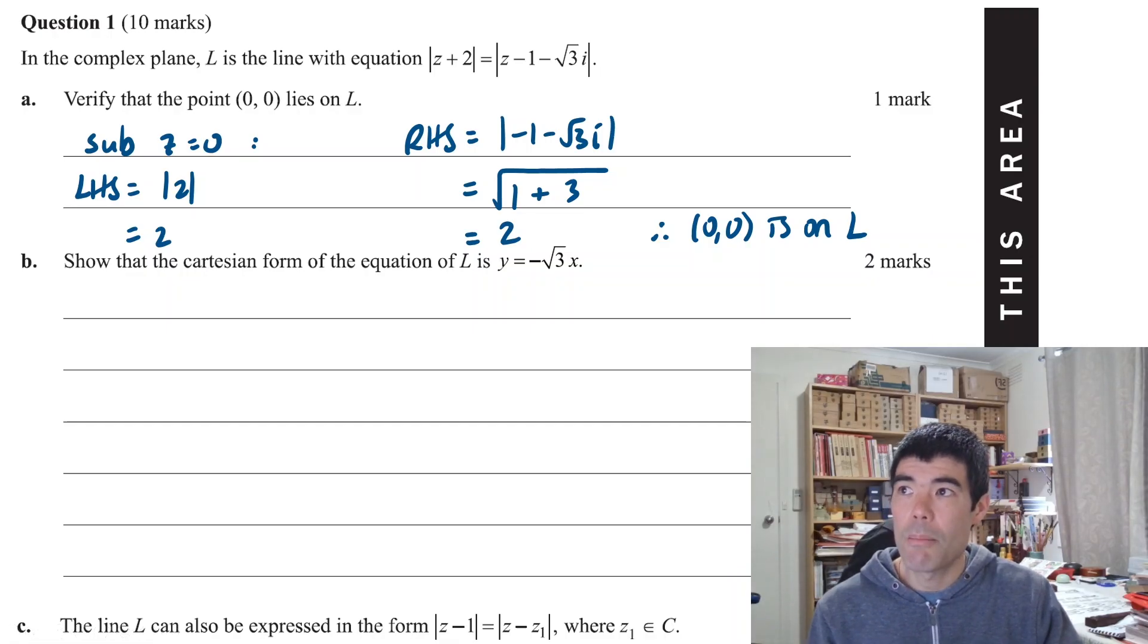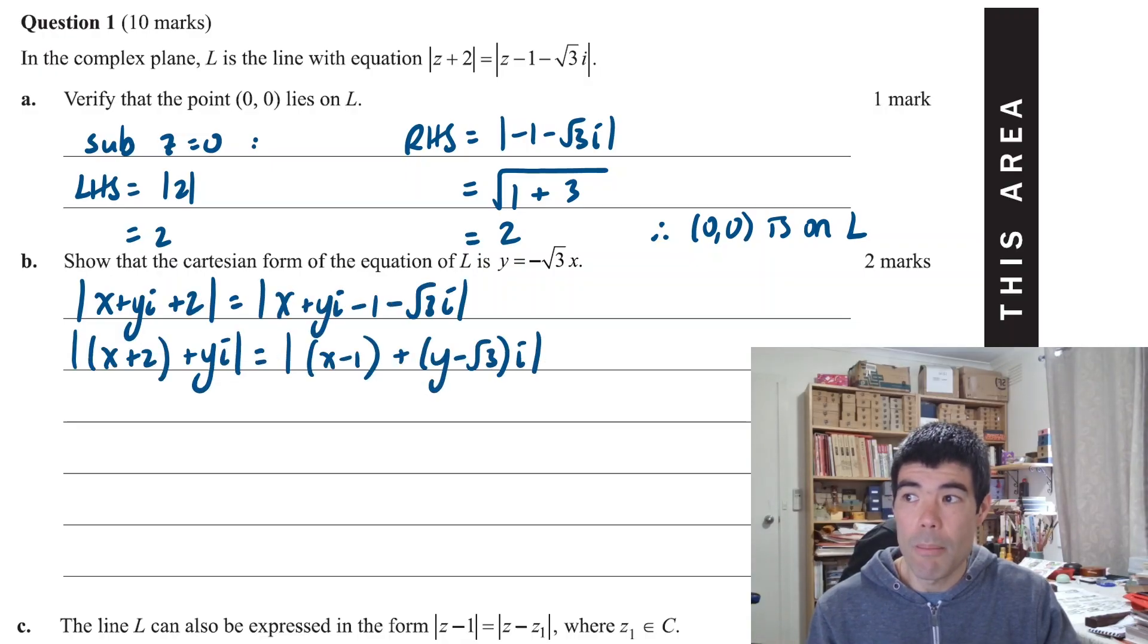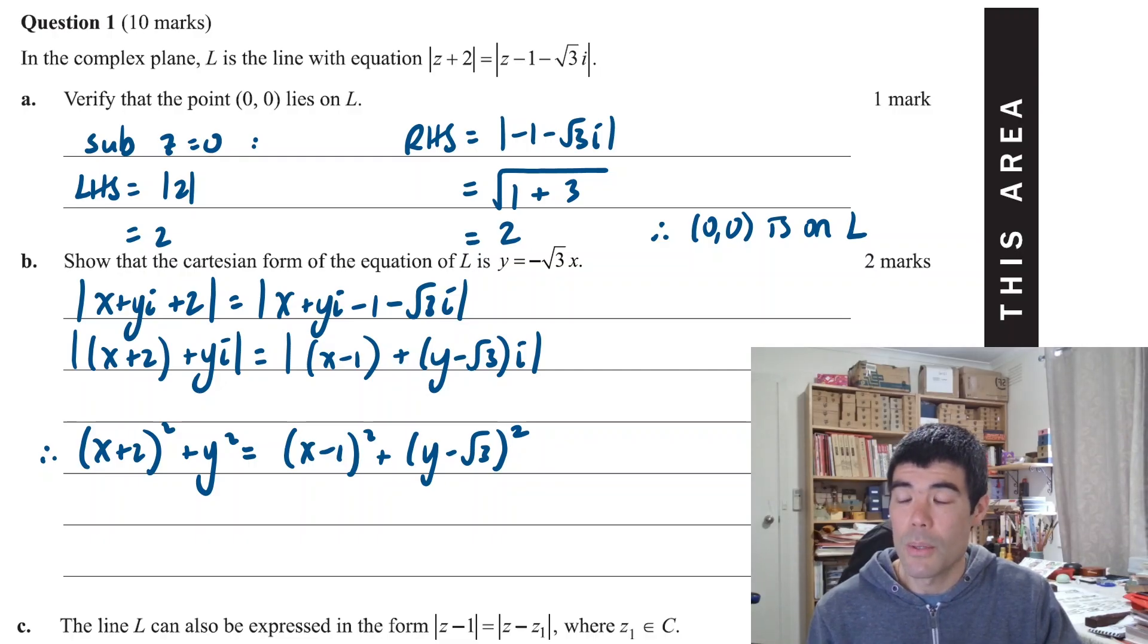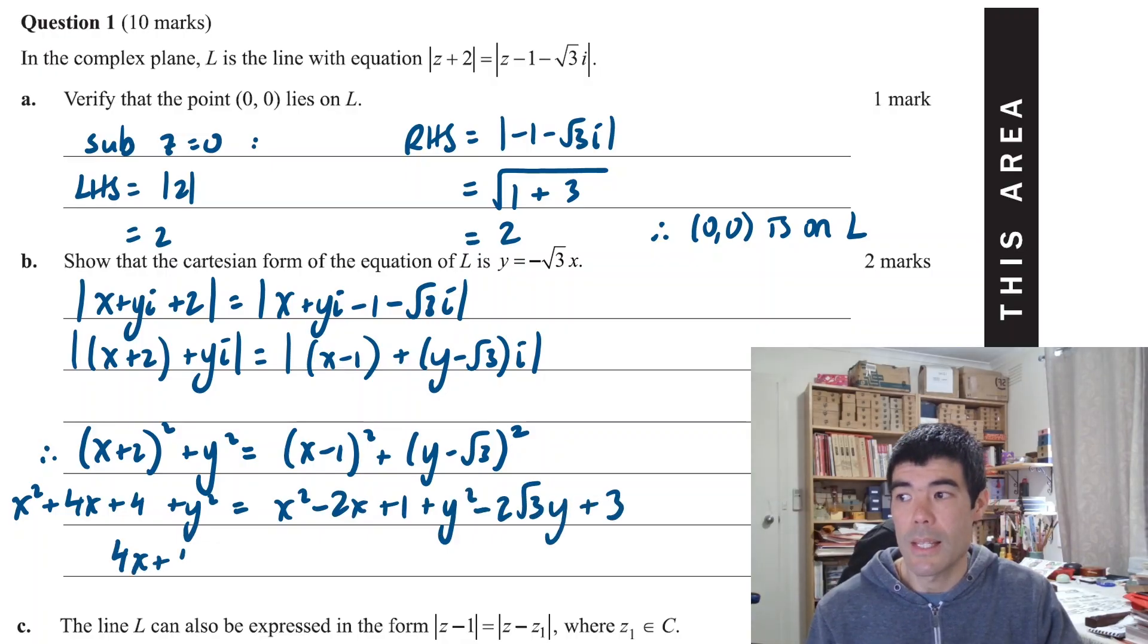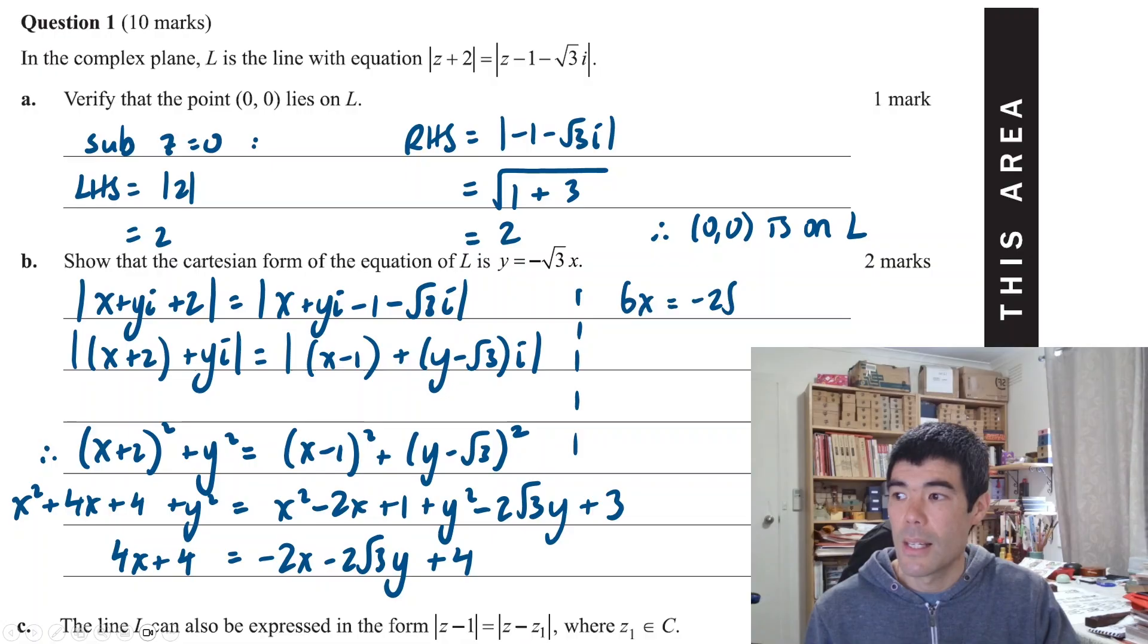Part B is to show that. So we want to start by replacing z with x + yi and then probably grouping the real terms and the imaginary terms on each side. Because we're going to use the Pythagorean theorem to show that (x+2)² + y² = (x-1)² + (y-√3)². We're going to have square roots on both sides. So we don't need to worry about those. We can then expand out the brackets and all the x squareds and y squareds would all cancel out. Then what we're trying to get to is y = -√3x and pretty almost there. We can cancel out the 4s on both sides and then get y by itself. It'd be -√3x.